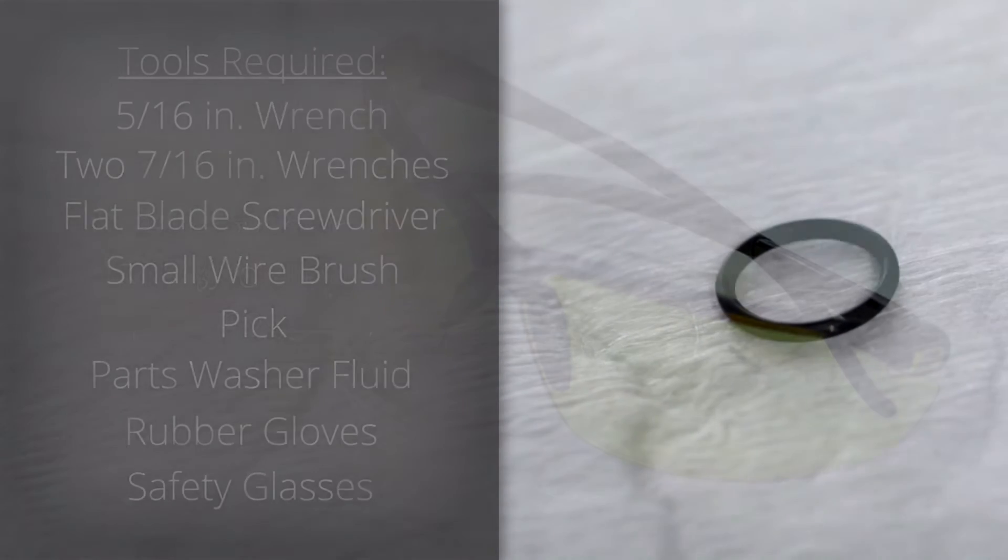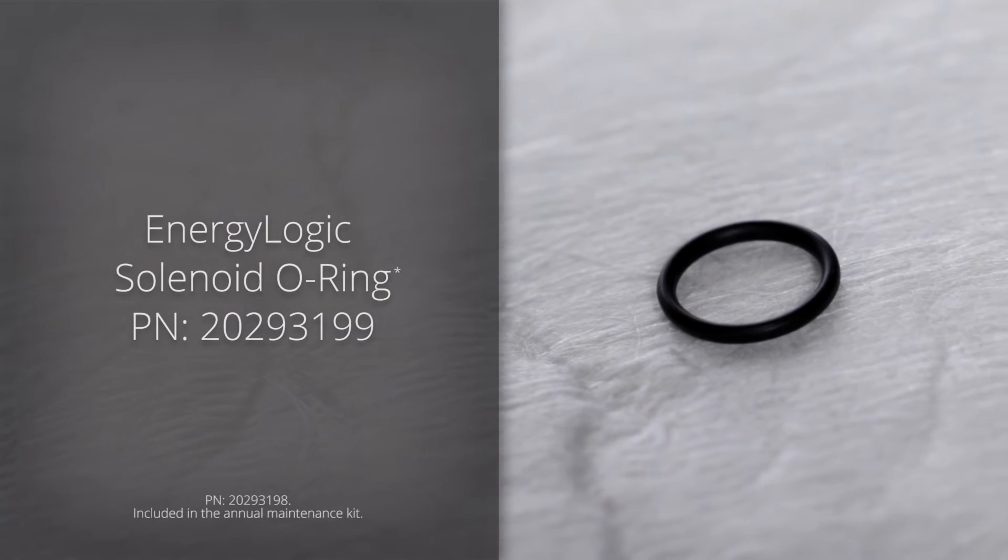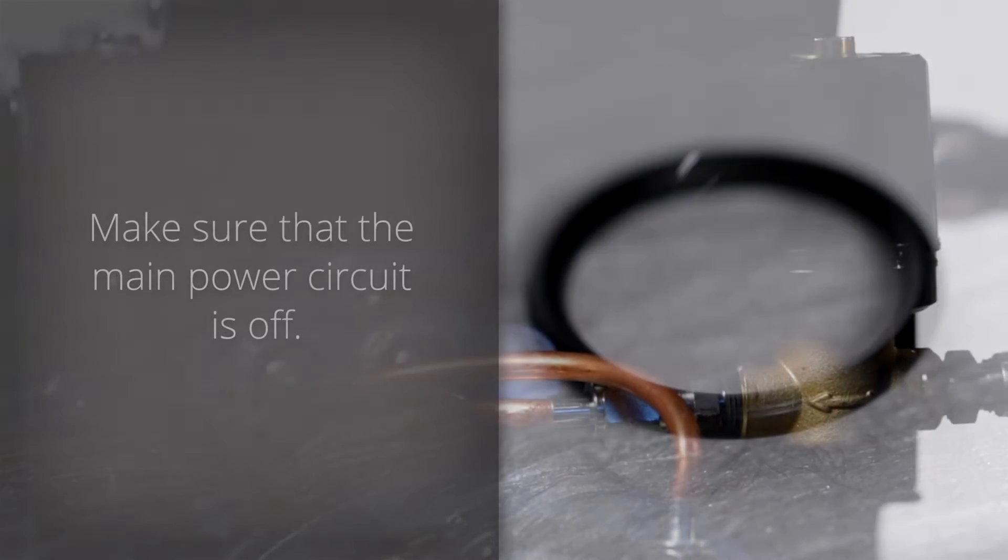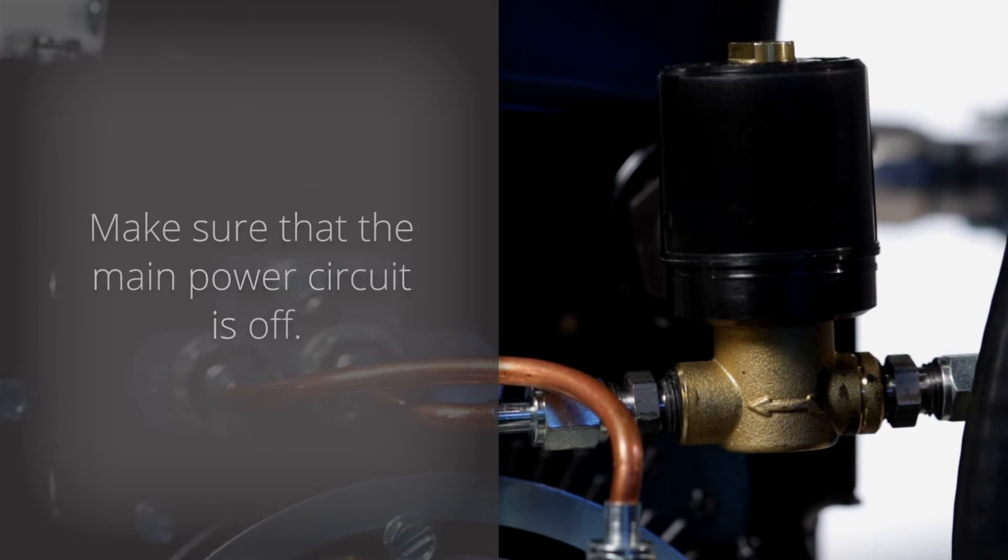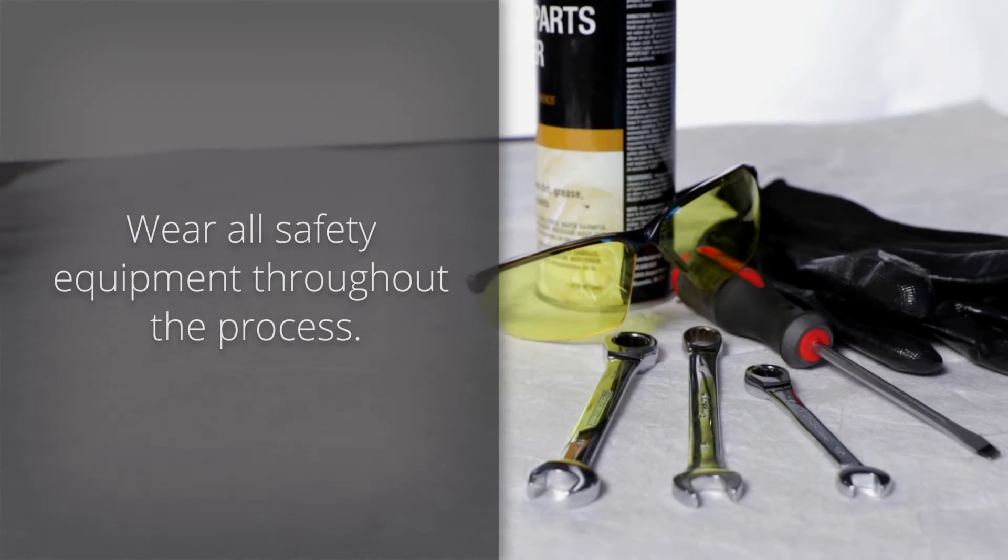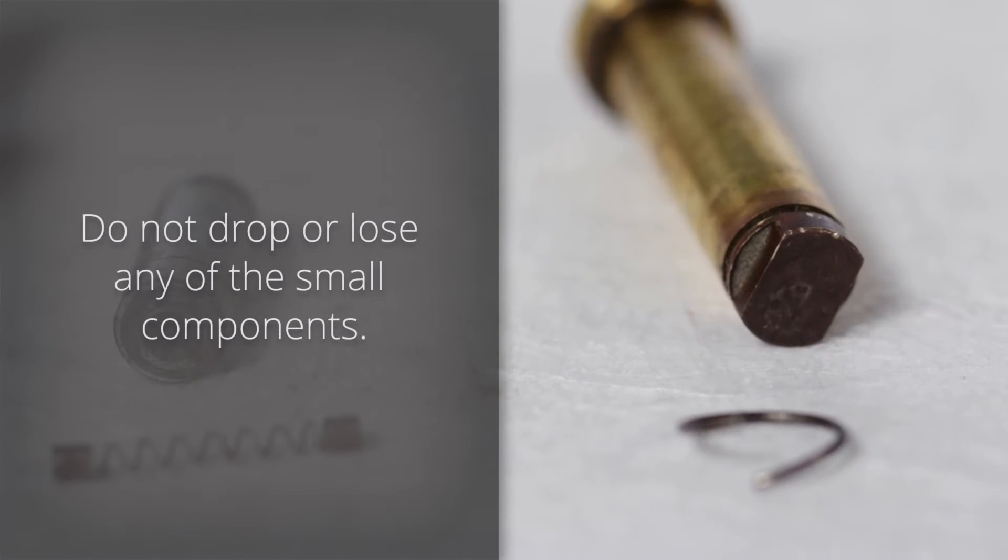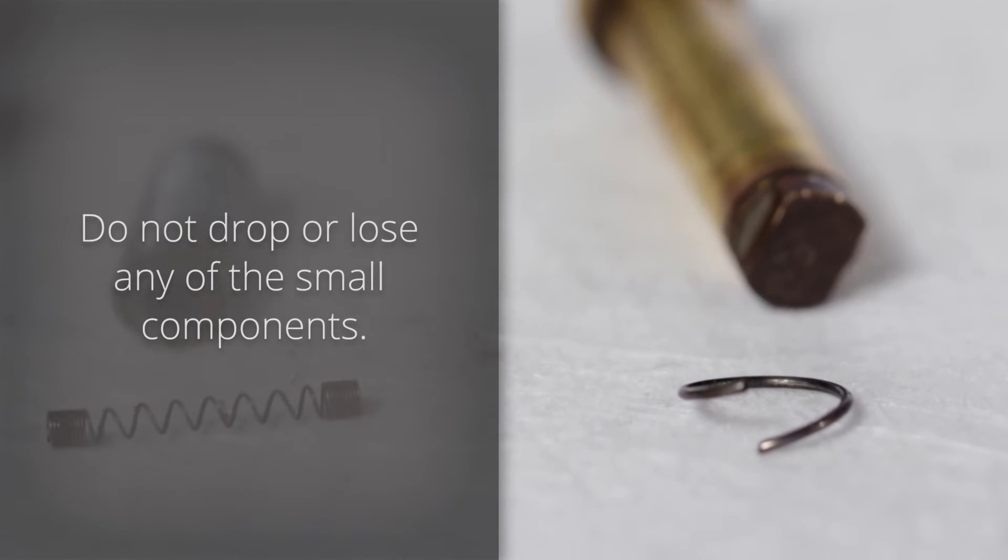You'll also need an EnergyLogic replacement solenoid o-ring. Before you get started, make sure the main power circuit is off. Wear all safety equipment throughout the process. Be careful not to drop or lose any of the small pieces you'll be handling.